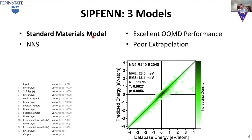The first model is called the Standard Materials Model. This network was designed to be comparable to existing methods for predicting formation energy. The best of those had a mean average error of about 70 meV per atom. Through careful design of neural networks and training methods, we were able to lower this number to 28 meV in the same test. It gives excellent OQMD performance, but it's sometimes quite poor at extrapolation because it fits the data quite well while it might not be perfect at fitting the true underlying phenomenon.